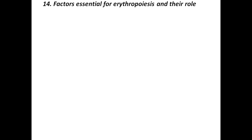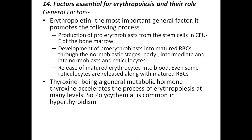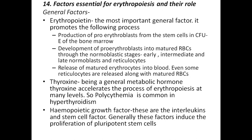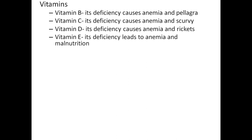Factors essential for erythropoiesis: general factors include erythropoietin — the most important — which promotes production of pro-erythroblasts from CFU-E cells in bone marrow, development through normoblast stages to reticulocyte, and release of matured erythrocytes into blood. Thyroxine accelerates erythropoiesis at many levels; polycythemia is common in hyperthyroidism. Hemopoietic growth factors such as interleukins and stem cell factor induce proliferation of pluripotent stem cells. Vitamins required: vitamin B deficiency causes anemia and pellagra; vitamin C deficiency causes anemia and scurvy; vitamin D deficiency causes anemia and rickets; vitamin E deficiency leads to anemia.